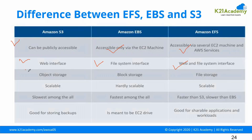S3 comes under object storage, EBS comes under block storage, and EFS comes under file storage. Amazon S3 is scalable. Amazon EBS is hardly scalable — it is not as easily scalable as the other two. EFS is highly scalable. Depending on the performance requirements, each category works accordingly.